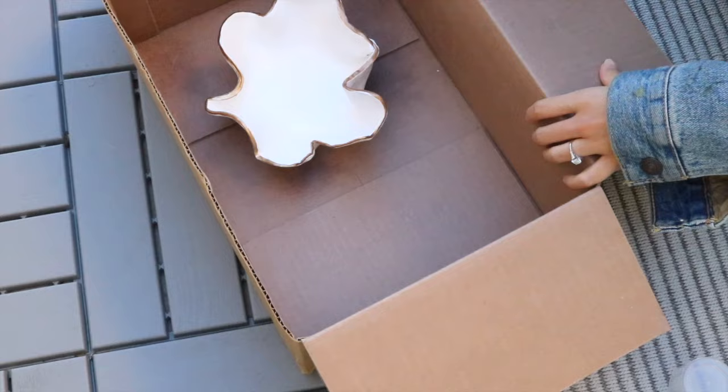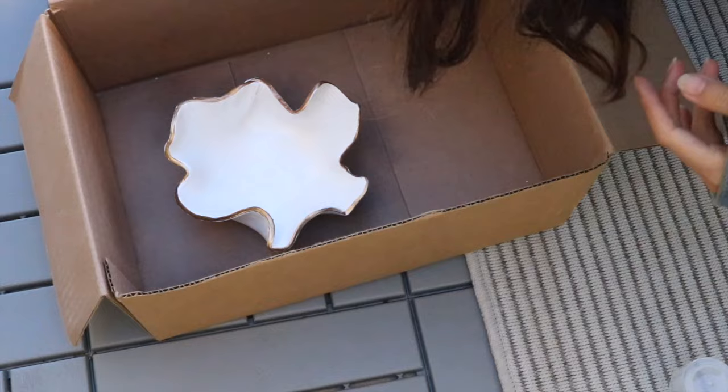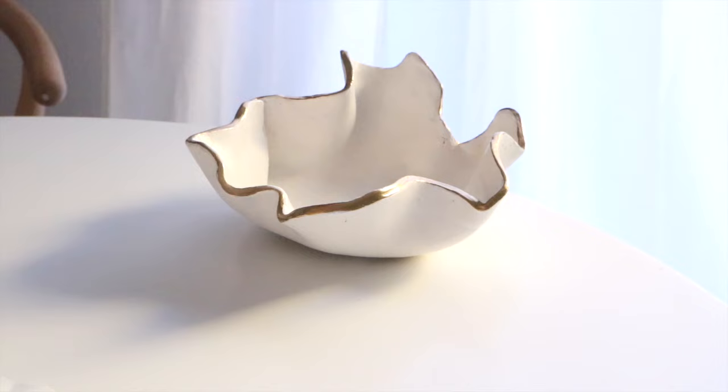Now that everything is dry, we're going to spray this with Aileen's glossy finish spray. For some reason, the spray made the gold edges not as shiny gold anymore, so I ended up having to go back to re-add the liquid gold leaf. That is it guys! We have our clam-shaped bowl. I think this is such a unique accent piece, and I'm so happy with how this turned out.